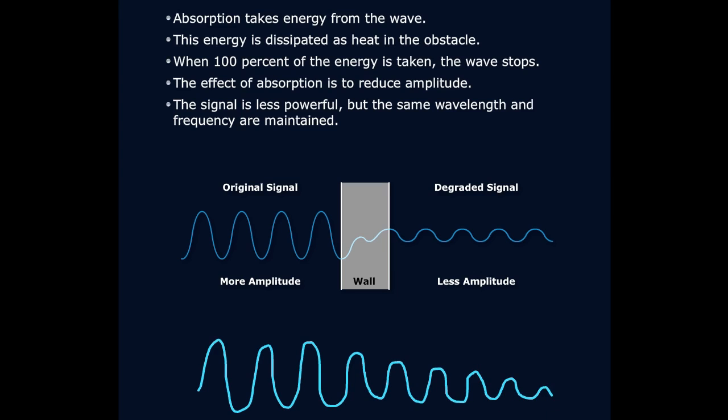But what happens when we put something in the middle, like a wall, like glass, like brick, like cinder block, like trees, like human bodies? All of those things can cause what is known as absorption of that signal, meaning something in your way is going to block that signal.